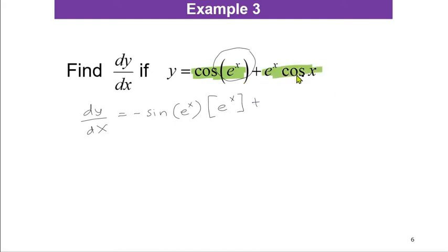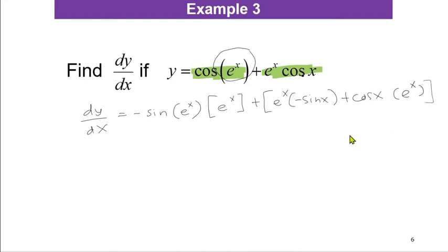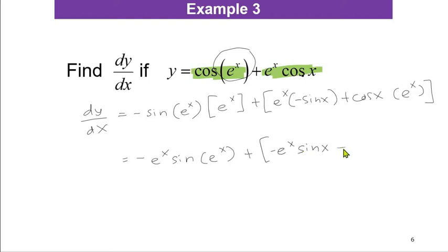For the part differentiating eˣ cos x, we use the product rule: u = eˣ and v' = negative sin x, plus v = cos x and u' = eˣ. So the derivative of the angle is 1 + (eˣ)(−sin x) + eˣ cos x. Rearranging, dy/dx = negative sin(x + eˣ cos x) times [−eˣ sin x + eˣ cos x].